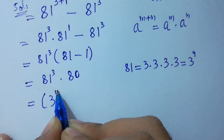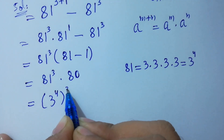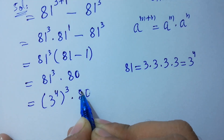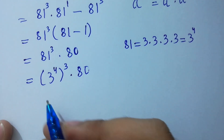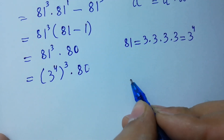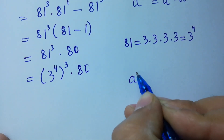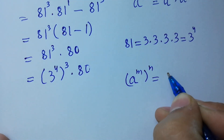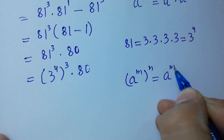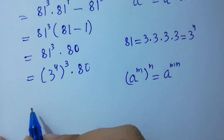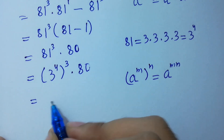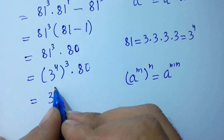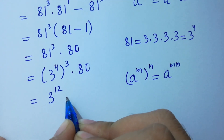So it will be equal to 3 to the power 4, cubed, times 80. Since a to the power m, to the whole power n, equals a to the power m times n, we have 3 to the power 4 times 3, which is 3 to the power 12, times 80.